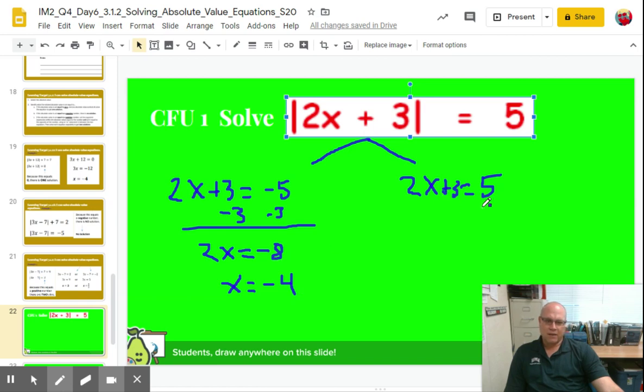Right side, same thing. I subtract 3 from both sides so I get 2x equals 5 minus 3 is 2. Divide both sides by 2, x equals 1.